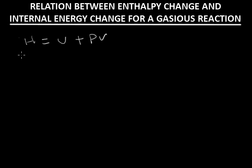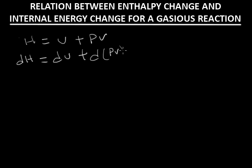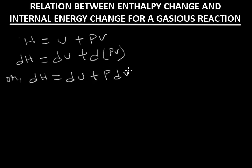Now, the small change of H, that is dH, is equal to dU plus d(PV). And d(PV) is equal to P dV plus V dP, so dH equals dU plus P dV plus V dP.